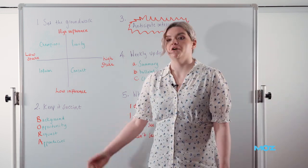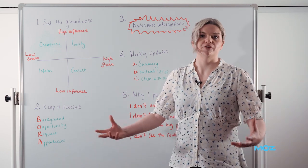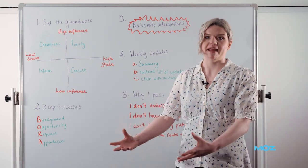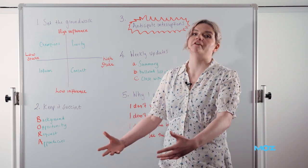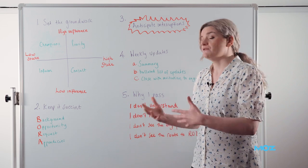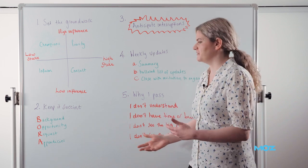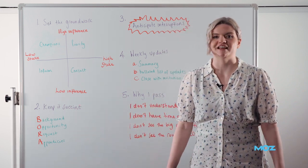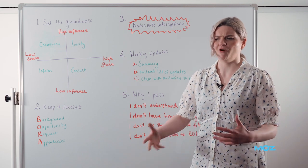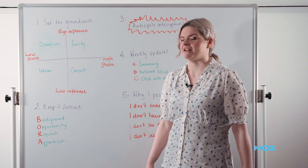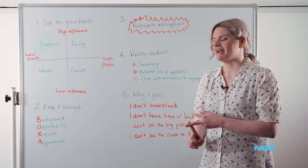Then get straight to the opportunity. What tangible thing is on the ground? What can we get out of making this decision? How will it impact the company and drive revenue? Then move on to the request. People often miss this—they set the background and opportunity but leave it up to the senior stakeholder to figure out what they're asking for. Be really explicit. What is your ask? Is it budget? Resource? A decision to be made?